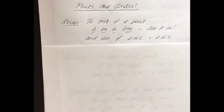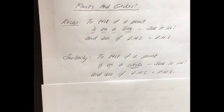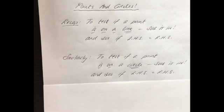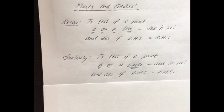So that's the recap from coordinate geometry of the line. Now we're going to look at the same idea with circles. To test if a point is on a circle, we take the x value and y value of the point, substitute into the equation of the circle, and check if the left hand side equals the right hand side. If it does, the point is on the circle; if not, it isn't.